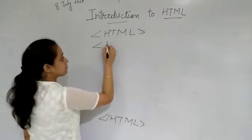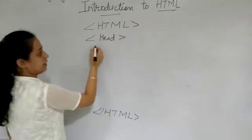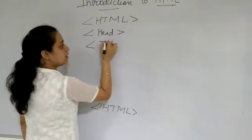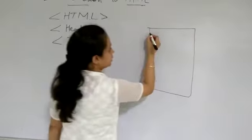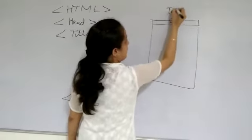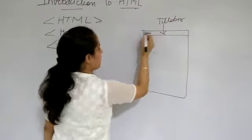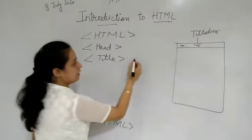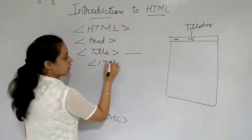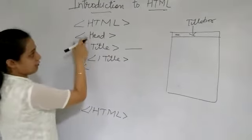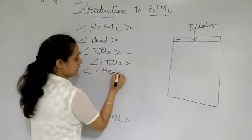And now, after this, here comes your head tag. And in head tag, we can give the title. Title means, suppose this is your web page and this is your title bar. If we want to give the name on the title bar, then we have to use the title tag. Write the name and then we have to close the title tag. And then, we have to close the head tag also.